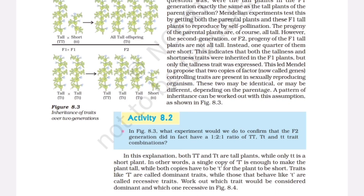However, the second generation, or F2, progeny of the F1 tall plants are not all tall. Instead, one quarter of them are short. This indicates that both the tallness and shortness traits were inherited in the F1 plants, but only the tallness trait was expressed. This led Mendel to propose that two copies of a factor — now called genes — controlling traits are present in sexually reproducing organisms. These two may be identical, or may be different, depending on the parentage. A pattern of inheritance can be worked out with this assumption, as shown in Figure 8.3.